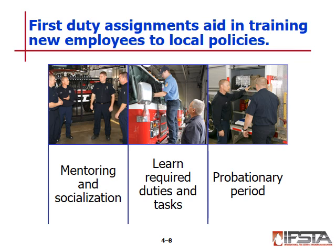During a probationary period, it's a good idea to have a taskbook — a review of common things learned in recruit school plus other things you feel are important to cover. Anytime a task is verified, you sign off on it and the employee signs off, giving you a record that they've been trained on that topic. It can be something as simple as organizational policies for shift swaps to deploying a roof ladder. That running record during the probationary period is very valuable.